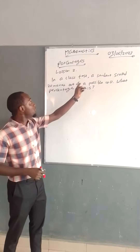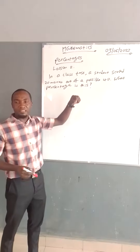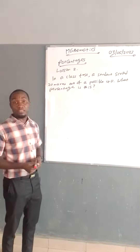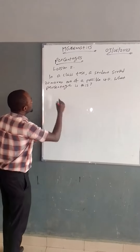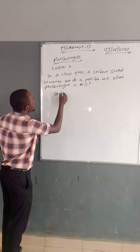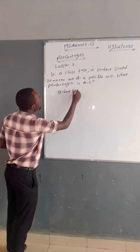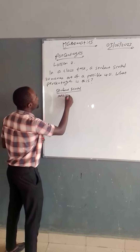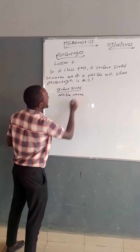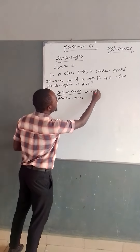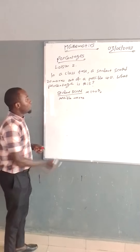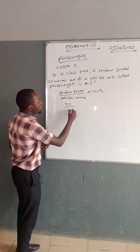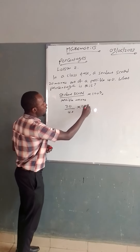Instead of the marks, to convert the 20 marks into a percentage, we use the student's marks over the possible marks, then times 100 percent. The student's marks are 20, and the possible marks are 40, then times 100 percent.